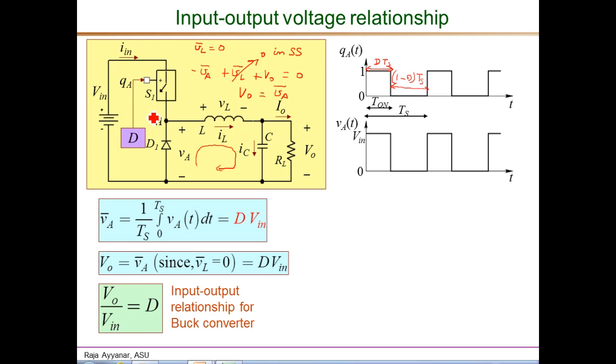That is an important relationship that completely characterizes the buck converter for steady-state analysis. As a plot, this is the output voltage versus the duty ratio. A buck converter has a linear relationship between the output voltage and the duty ratio for a constant input voltage. The valid range of duty ratios are 0 to 1. At D equals 0, the output is 0, and it keeps increasing linearly till we reach D equals 1, when the output voltage becomes exactly equal to the input.